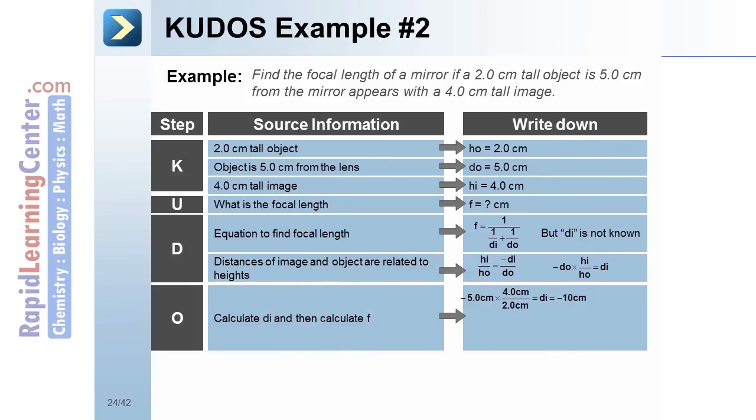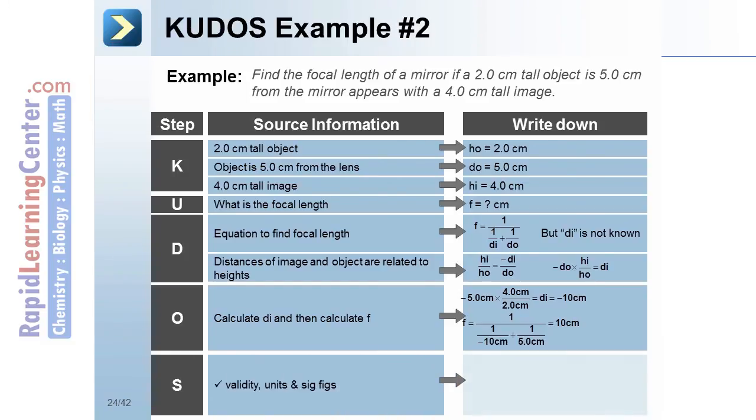For our output, we will need to first calculate our image distance. From there, we can use that bit of information in our lens equation to finally find a focal length. This is a more complicated two-step problem. For our substantiation, 10 cm is a reasonable answer, centimeters being the correct unit, and the number of significant figures is correct also.